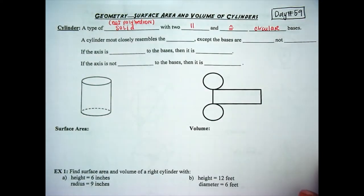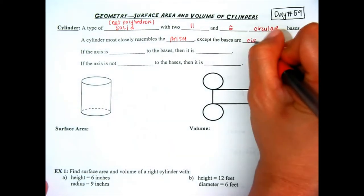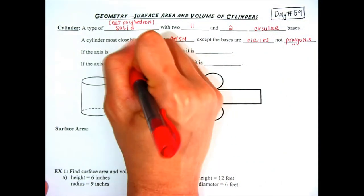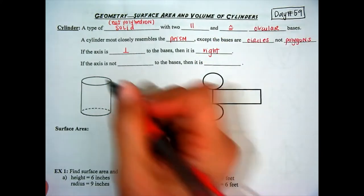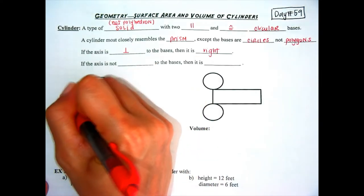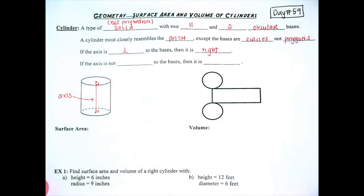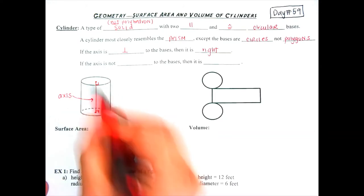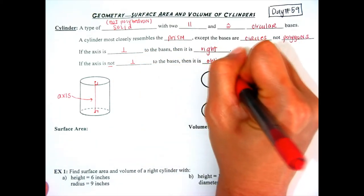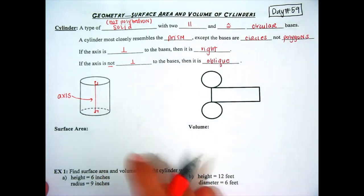Let's look at some characteristics of a cylinder. A cylinder most closely resembles the prism, except the bases are circles, not polygons. If the axis is perpendicular to the bases, then it is right. The axis for a cylinder connects the centers of the circular bases. This cylinder is an example of a right cylinder, because this axis is perpendicular to each of its bases. If the axis is not perpendicular to the bases, then it is oblique. Same with cylinders — if it's slanted, then it will be considered an oblique cylinder.